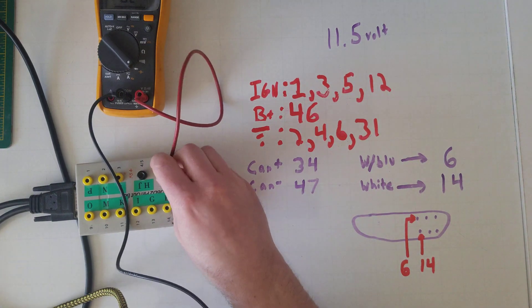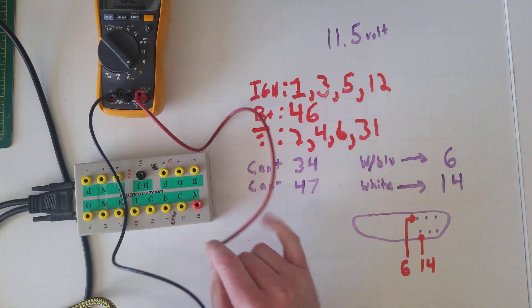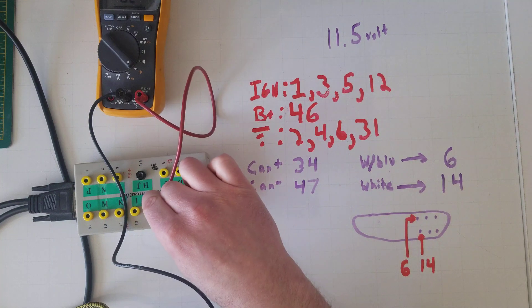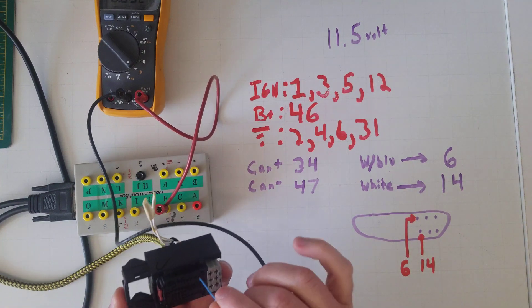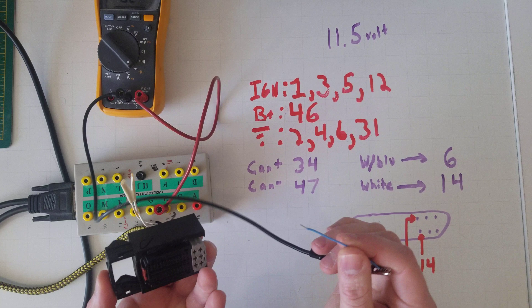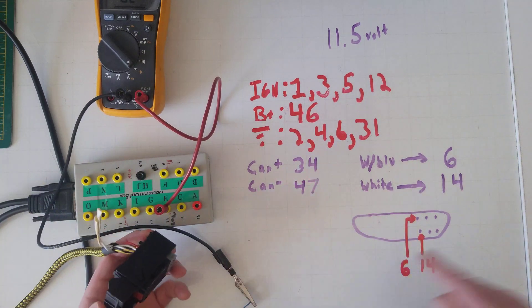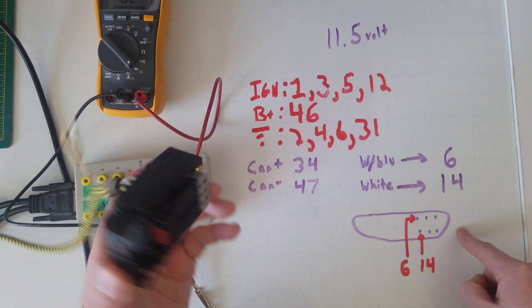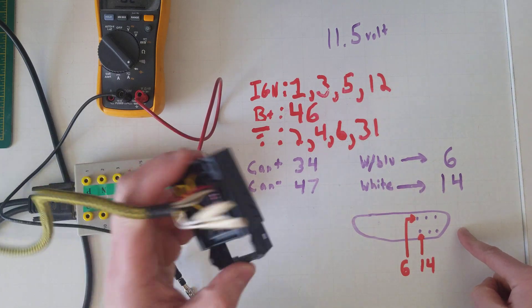And now let's just stick this one on the other side to make it easier. Pin 14 is gonna go to 47, which I already added in there. So I have continuity between the OBD2 port and my PCM plug.